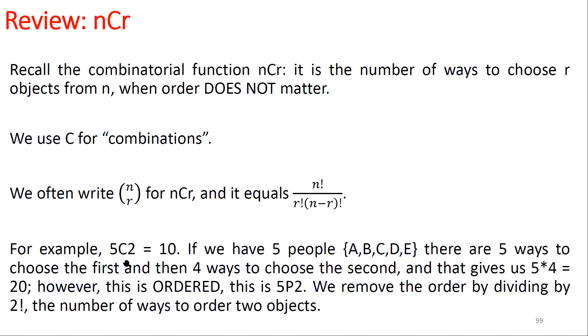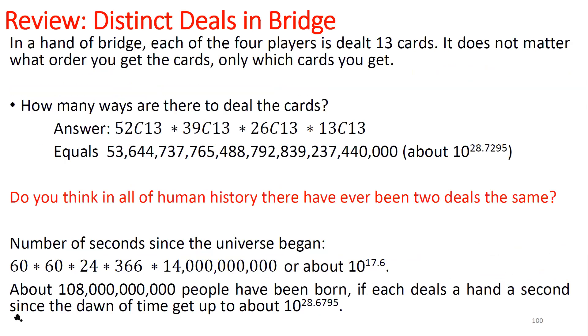For example, 5C2 equals 10. If we have 5 people A, B, C, D, E, there are 5 ways to choose the first person and then 4 ways to choose the second, giving us 20 pairs. However, this is ordered - we're talking about first person, second person. We have to remove the ordering by dividing by 2 factorial, which is the number of ways to order two objects.